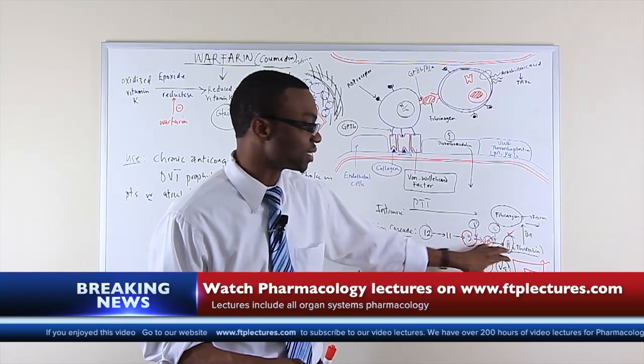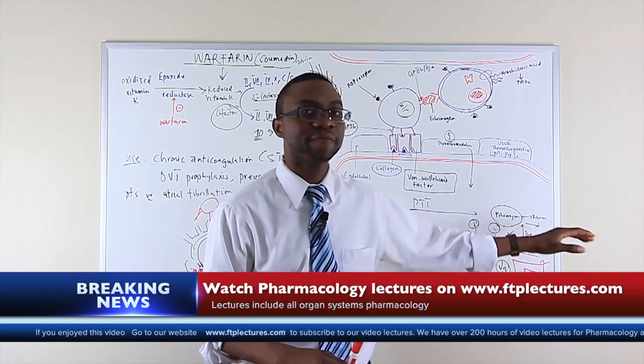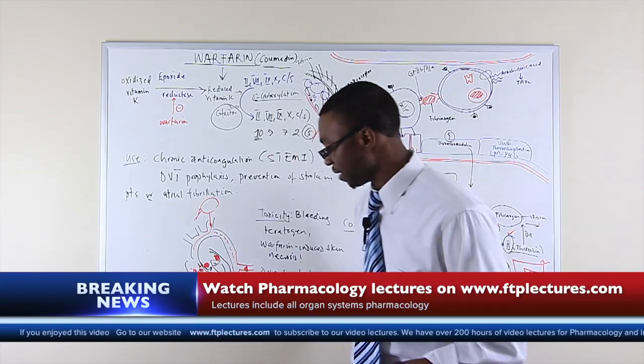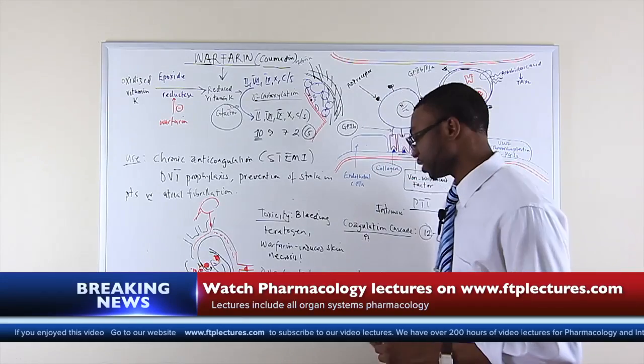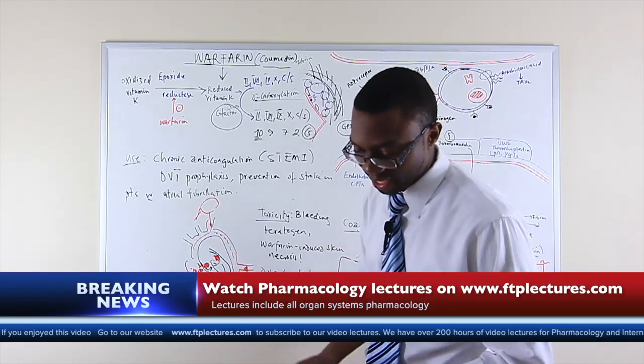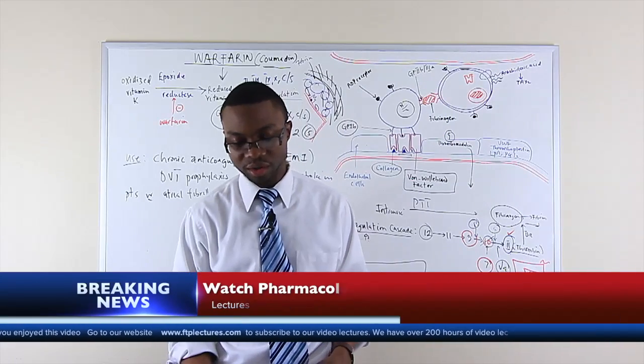Because once you put them back into place, the machine starts to run. You make thrombin. You make fibrinogen and fibrin. And the patient stops bleeding. So do not forget that. Vitamin K and fresh frozen plasma are the drug of choice to reverse warfarin. And that basically brings us to the end of our lecture on warfarin.